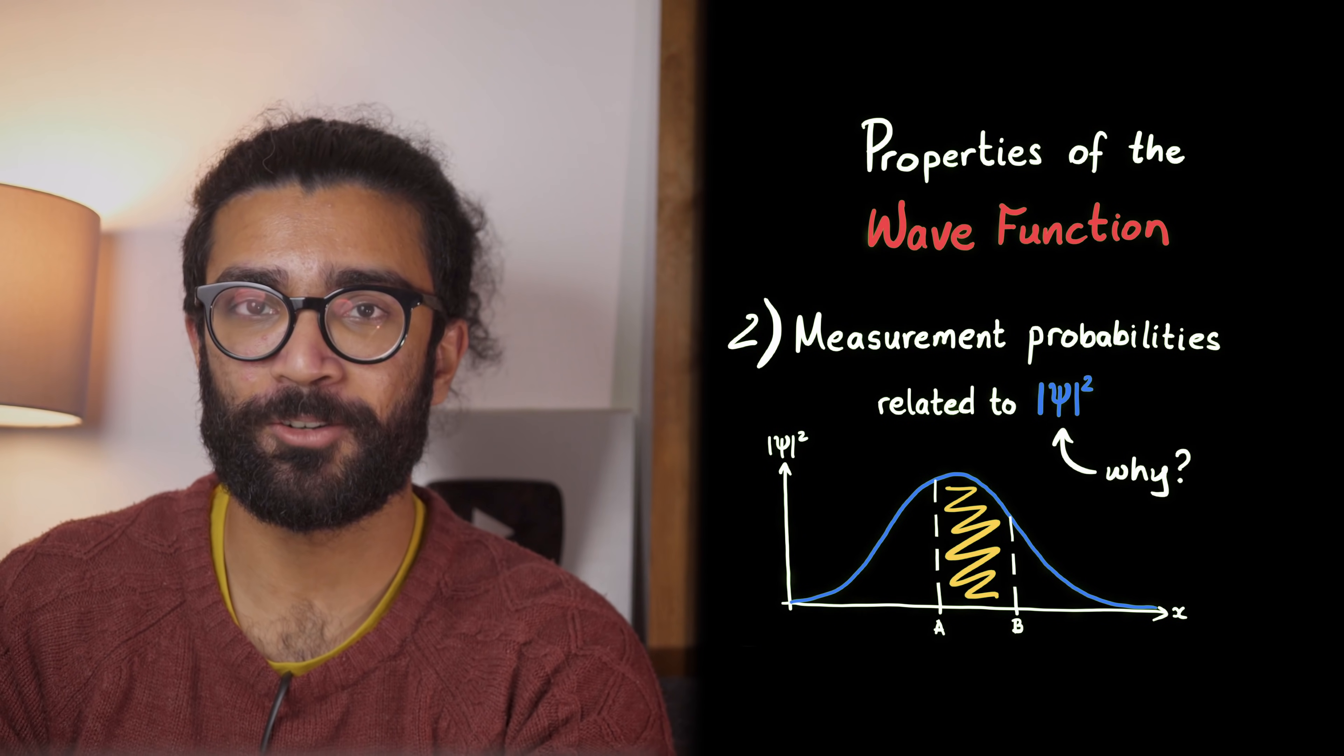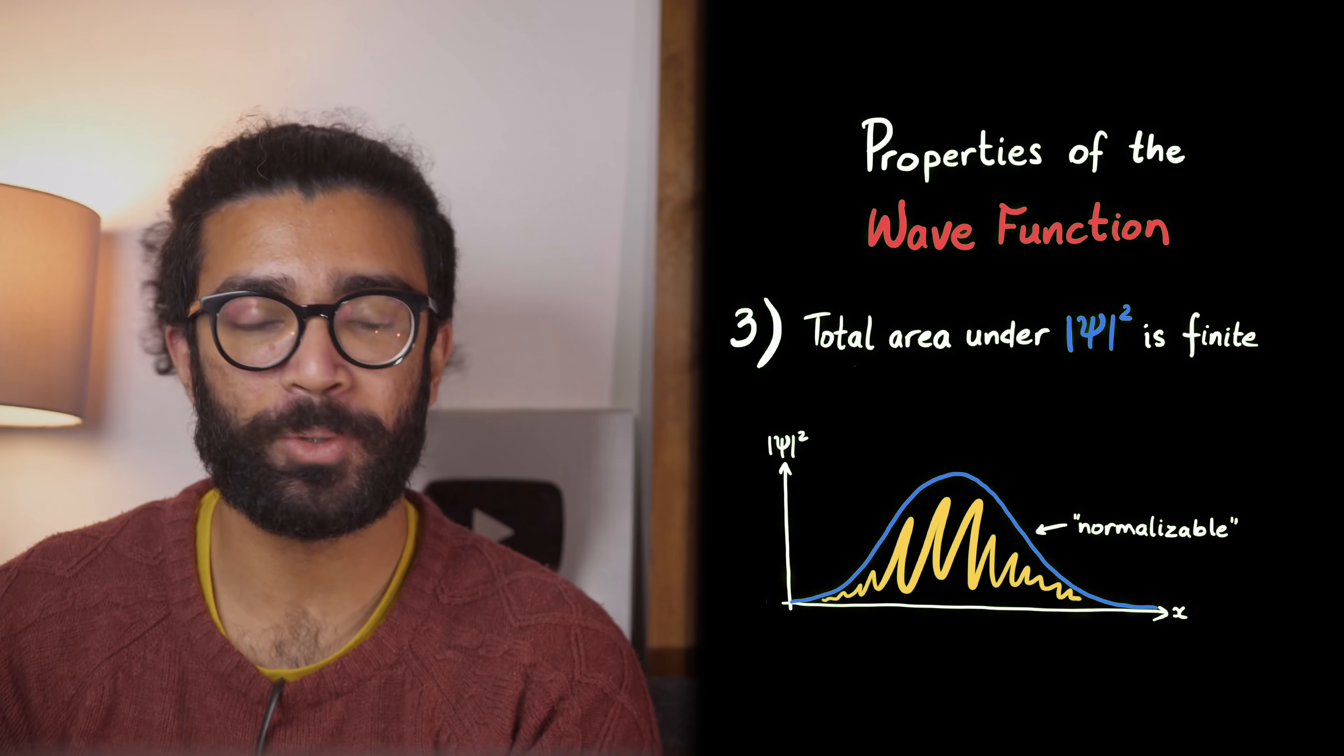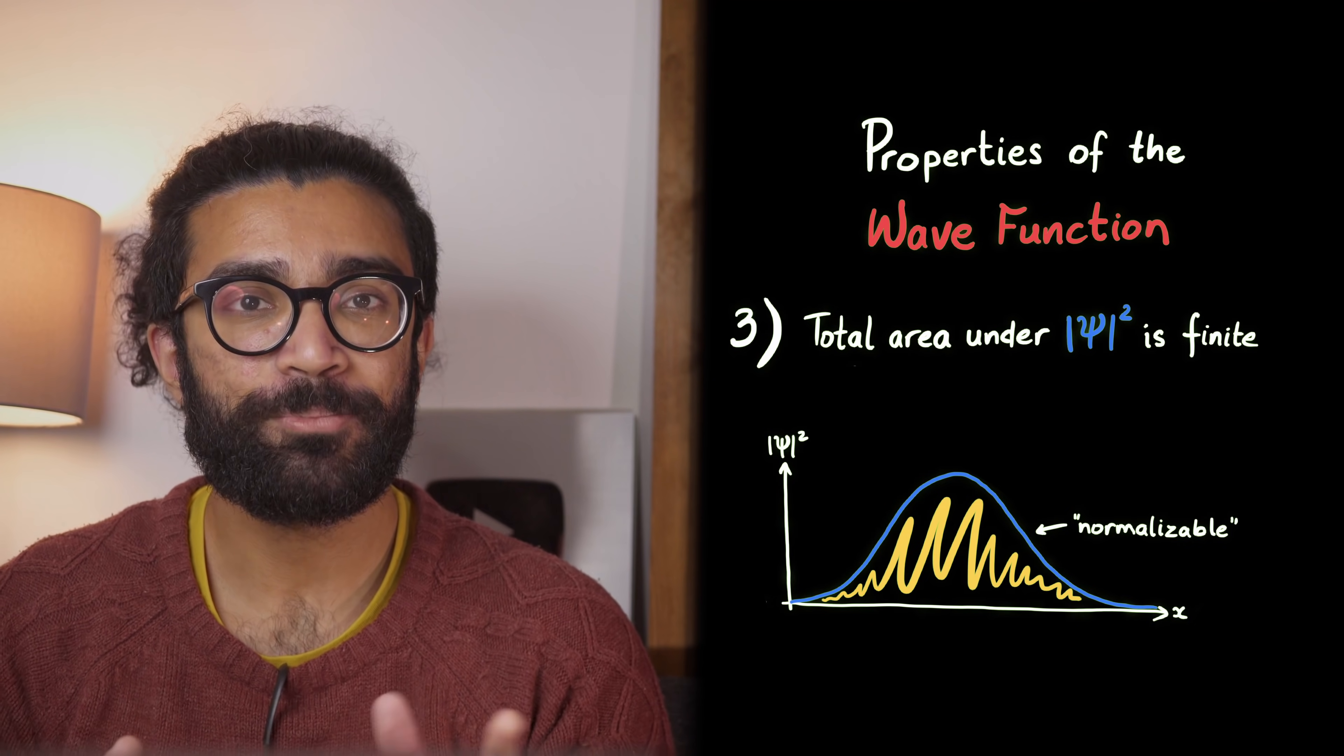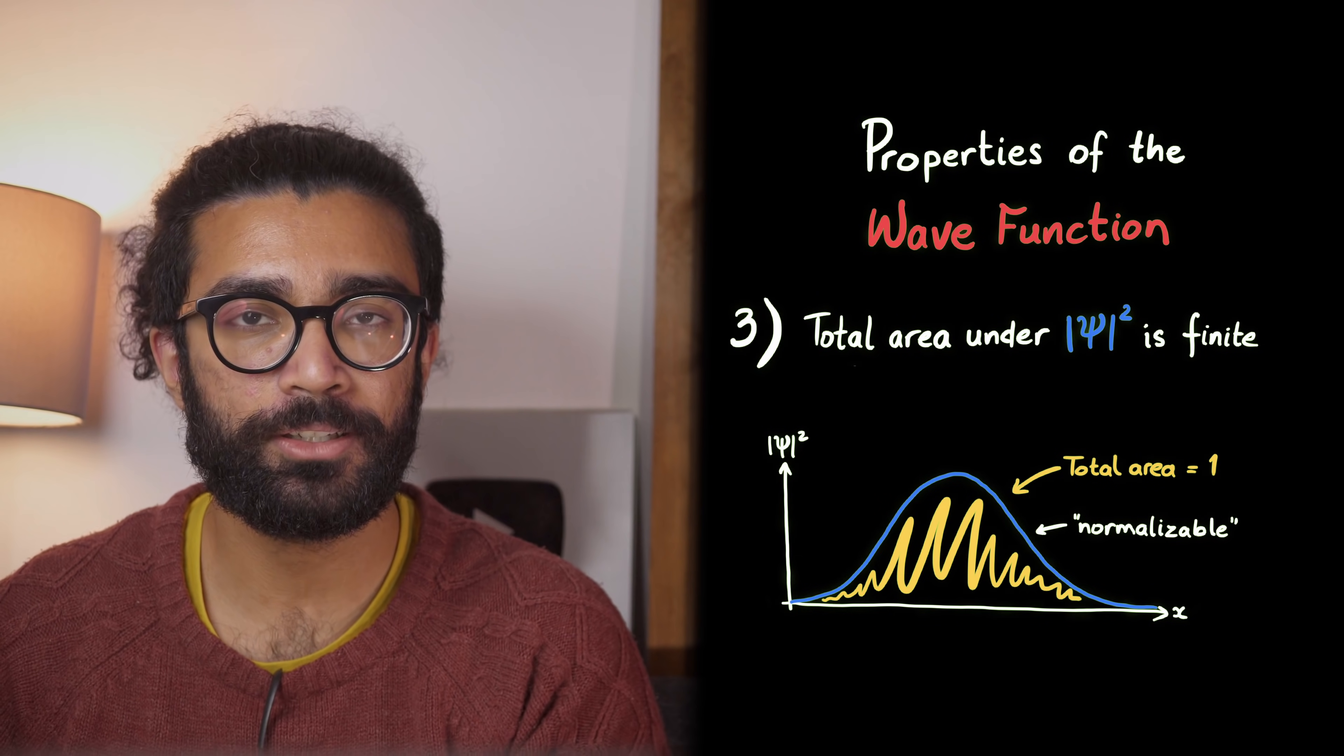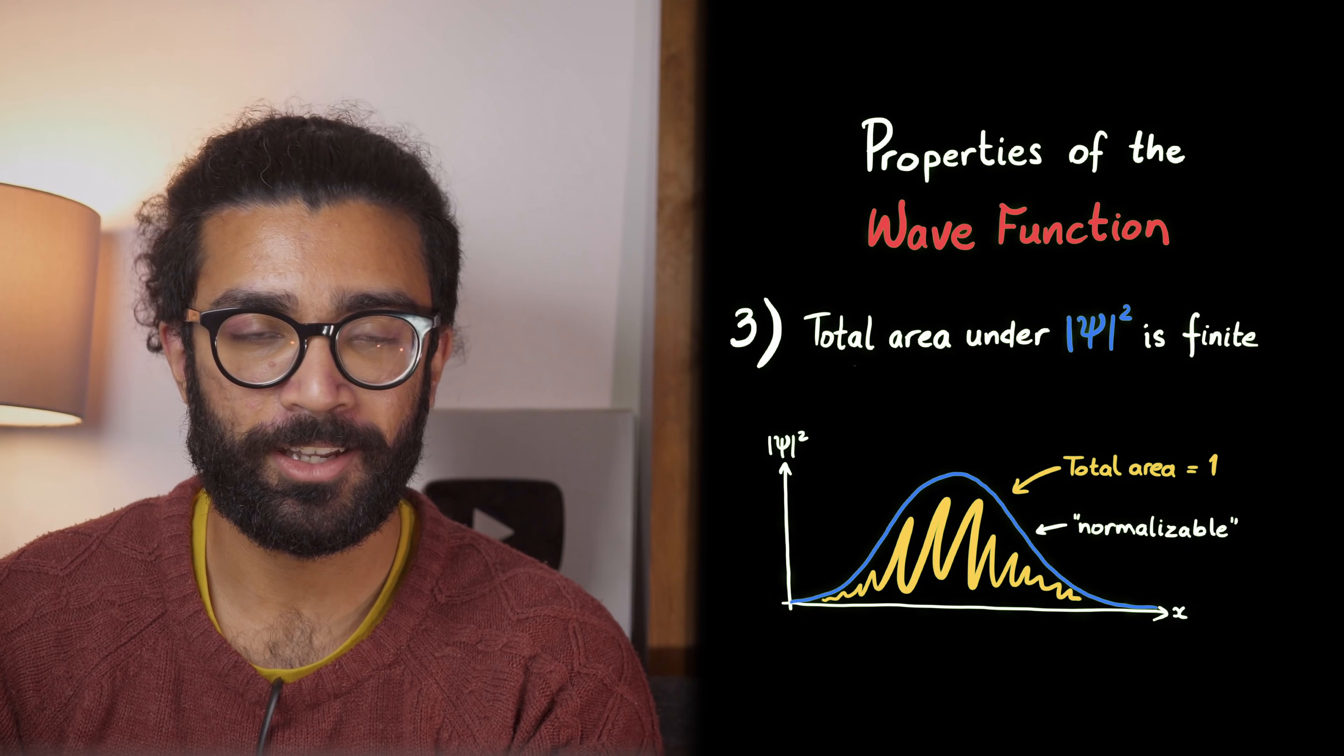A third property is that the wave function cannot be any random function we can think of. It has to be normalizable. This means we must be able to ensure that the total area under the entire wave function can be set to 1. It must be a finite area, in other words.